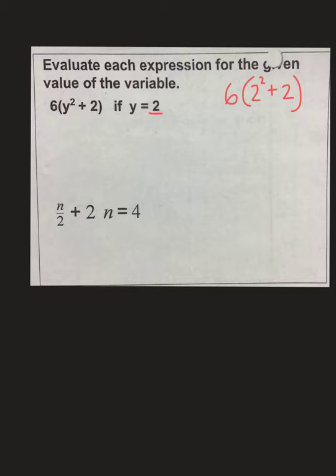And then we follow order of operations. So, PEMDAS, parentheses, but then inside my parentheses, I have an exponent and an addition sign. Exponent comes first. So, bring down everything else. 2 squared is 2 times 2, which gets me 4. Bring down plus 2. Now, I still have to work inside my parentheses before I can do anything else. So, 4 plus 2 is 6.